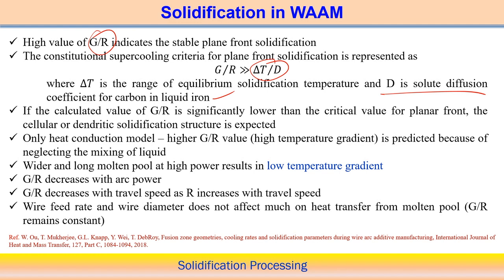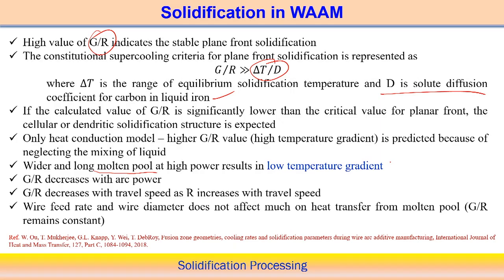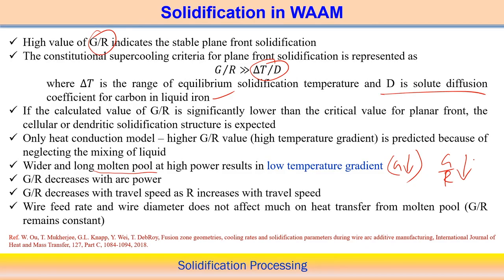Looking at the influence of different parameters on G/R: a wider and longer molten pool, created by high laser power, actually lowers the temperature gradient G. So the G value lowers when wider pools are created using very high power. Therefore, keeping the same laser scanning speed, G/R decreases at very high power — G/R decreases with increasing arc power.